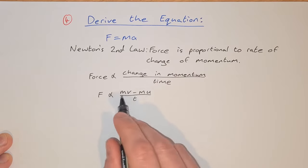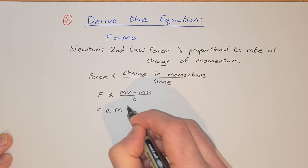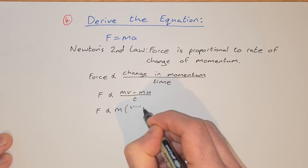Now we can factor out our m here. So f is proportional to m times v minus u over t.